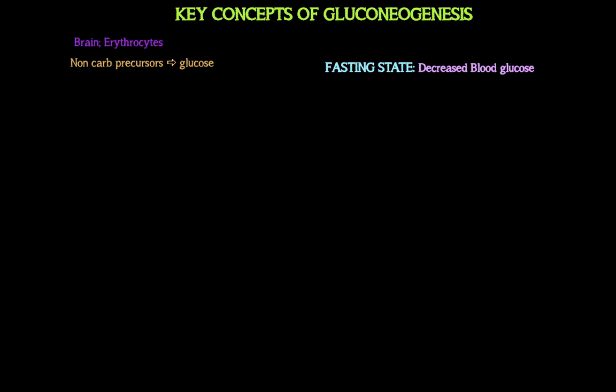Erythrocytes have no choice — they must use glucose as their fuel because they have no organelles, so they solely depend on glycolysis. When you're in a fasting state and blood glucose levels are dropping, that's a problem. The good news is we have a pathway called gluconeogenesis, which converts non-carbohydrate precursors to glucose. The job of gluconeogenesis is to maintain blood glucose levels during fasting.